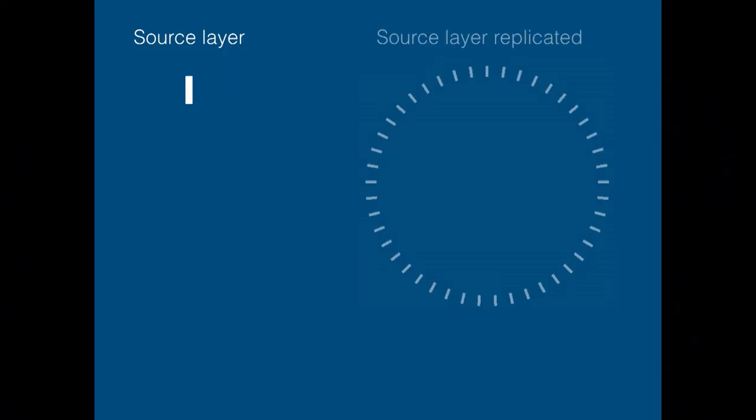Everything starts with a source layer. We define a rectangle, we give it a background — in this example, a white background. And then through CAReplicatorLayer, we end up having a full circle of this source layer replicated. How cool is that? It's really cool and it's really simple.